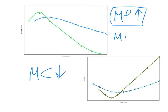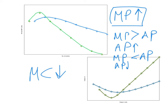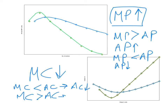When marginal product is higher than average product, average product will be increasing. When marginal product is lower than average product, average product will be decreasing. The opposite is true with marginal cost and average cost: when marginal cost is lower than average cost, marginal cost will drag the average cost down, so average cost will be decreasing. When marginal cost is higher than average cost, it will drag the average cost upwards and average cost will rise.